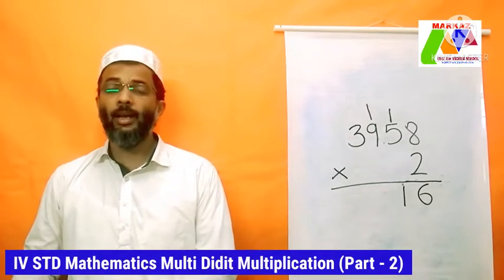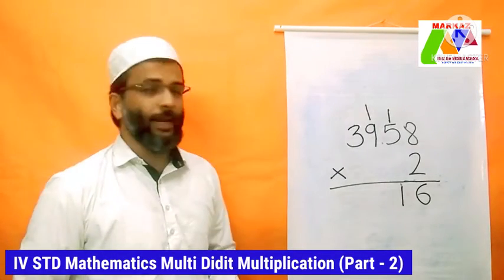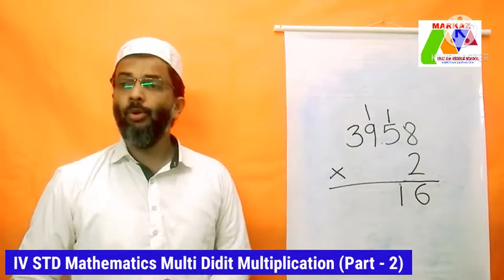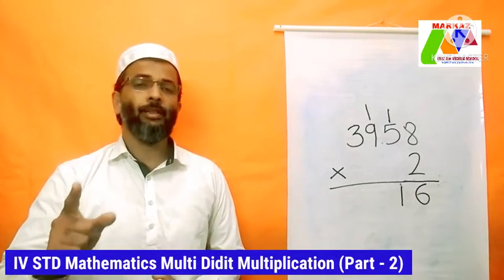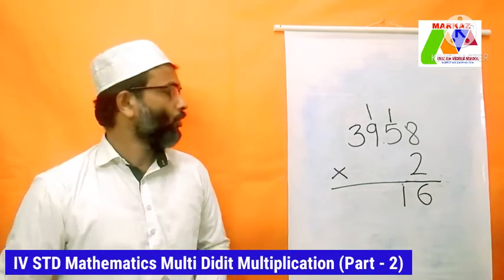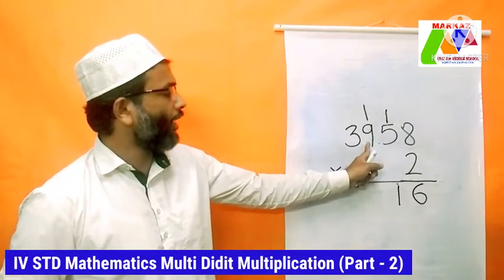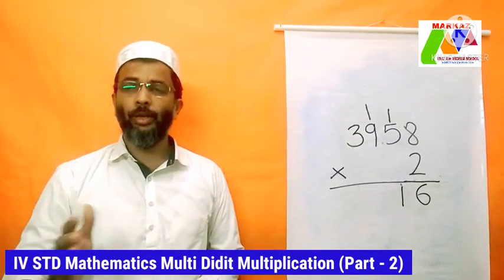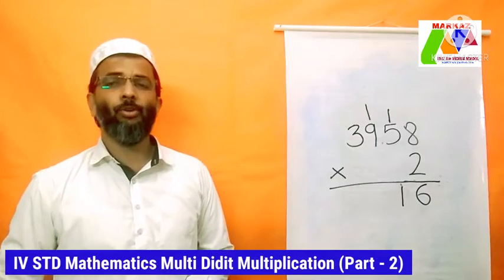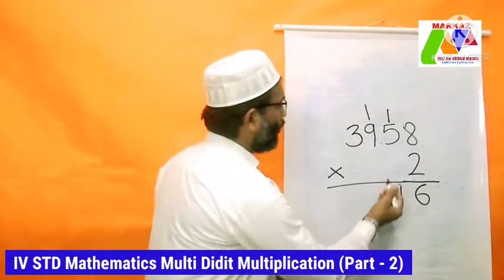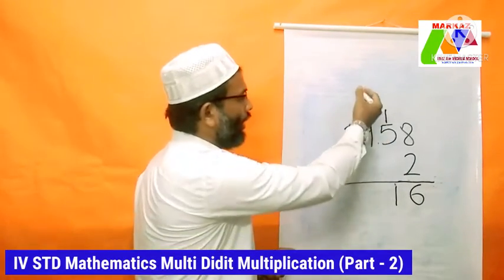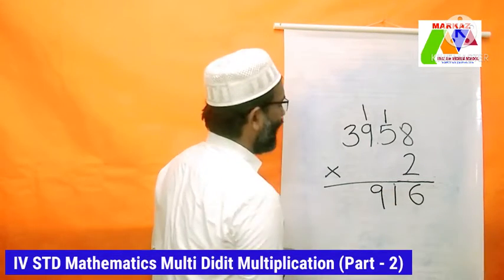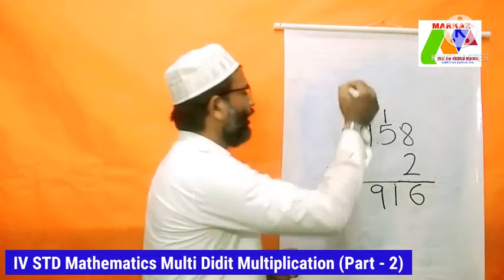For our third multiplication step, we multiply 2 × 9 = 18. Plus the carried 1: 18 + 1 = 19. It is a two-digit answer, so we carry again. Write 9 in the answer line and carry 1 to the next place.